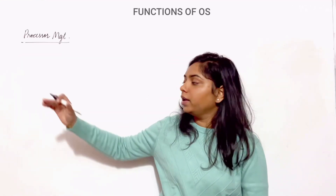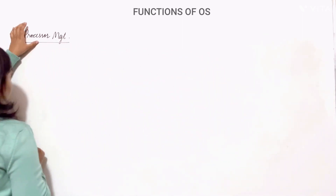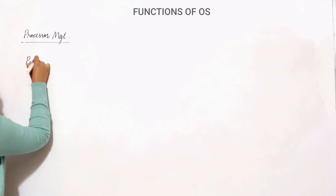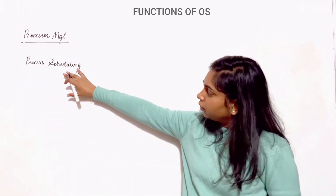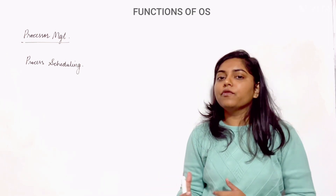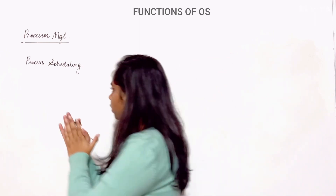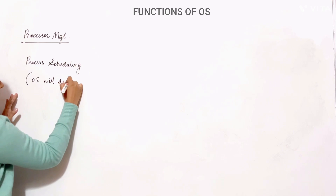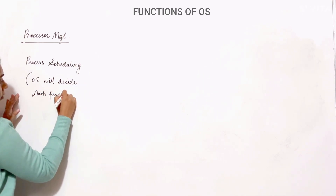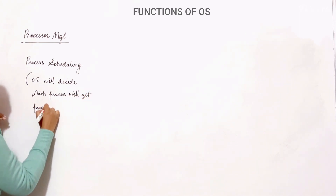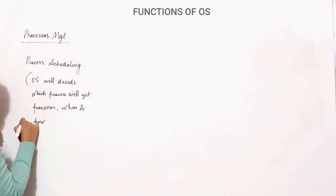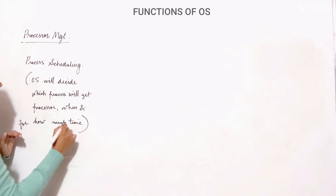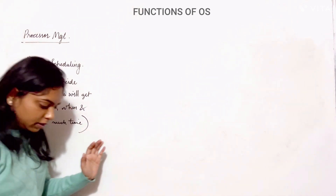The next function of operating system is processor management, where we are talking about the CPU. There is a key term used here: process scheduling. In process scheduling, the OS will decide which process will get the CPU, when it will get the CPU, and for how much time.